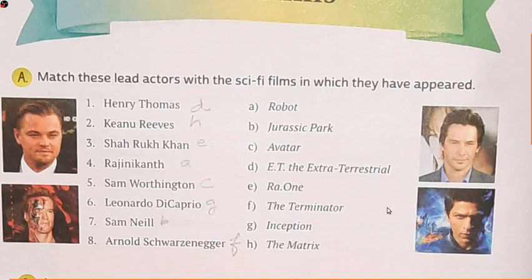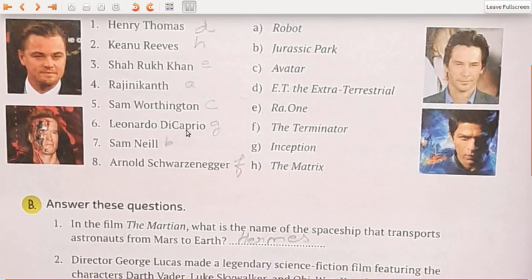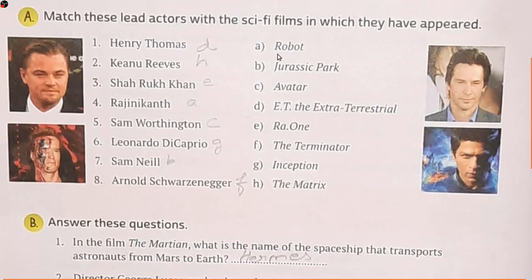Next we have Rajinikanth — Robot, which ninety-nine point nine percent of people would have seen. Next, Sam Worthington — Avatar. Then Leonardo DiCaprio — Inception. Second last, Sam Neill — Jurassic Park, which I hope most of you would have seen. And finally Arnold Schwarzenegger — The Terminator. These were the famous persons related to these science fiction movies.